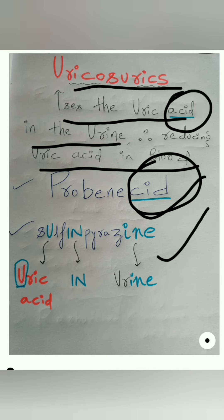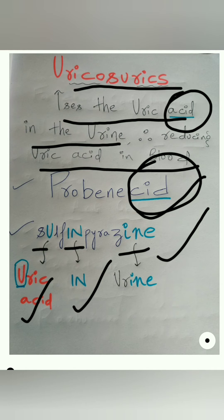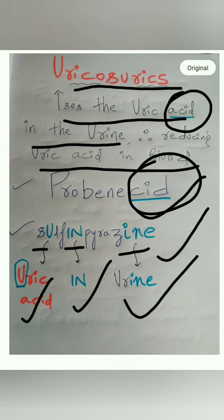For sulfinpyrazone, notice that in the word 'sulfinpyrazone' there is a 'u', an 'i-n', and an 'i-n-e'. From 'u' you can imagine uric acid, and 'i-n-e' you can imagine as urine. So 'uric acid in urine' — U, IN, INE — gives you sulfinpyrazone, which also falls under uricosurics.